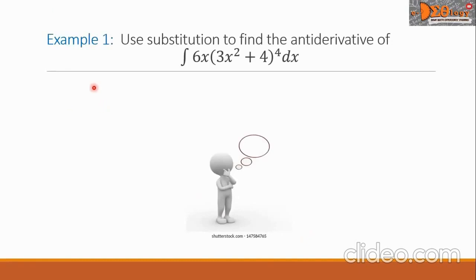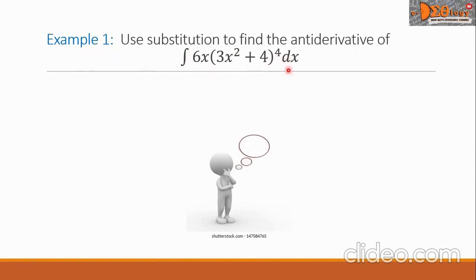This is Example 1. Use substitution to find the anti-derivative of the integral of 6x times the quantity 3x squared plus 4, raised to the 4th power, dx.